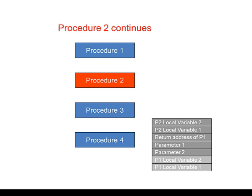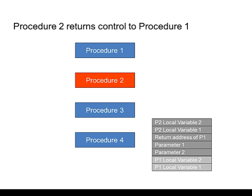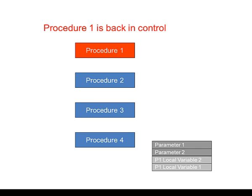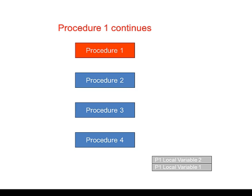As before, when Procedure 2 is ready to return control to Procedure 1, local variables are popped off the stack. Procedure 1's return address is obtained, the program counter is repopulated, and Procedure 1 is back in control. It cleans up the stack and picks up from where it left off. So here we are back where we started.